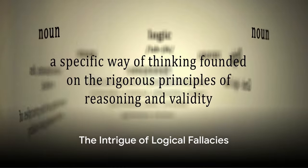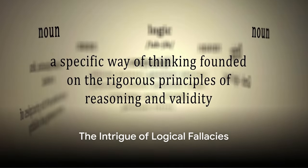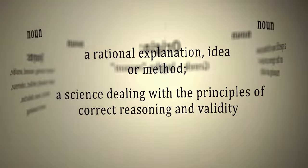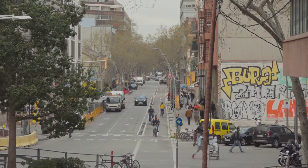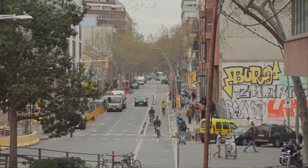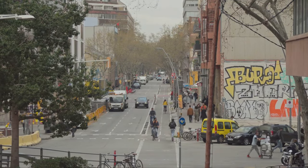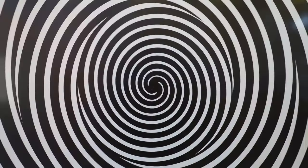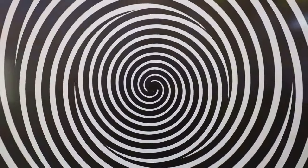Ever pondered on why some arguments, despite seeming sound, still feel off? Well, you're not alone. This is where we introduce the fascinating world of logical fallacies. These are errors or bugs in our reasoning that can make an argument appear convincing even when it's not. They're like optical illusions of the mind, tricking us into believing something that's not necessarily true.